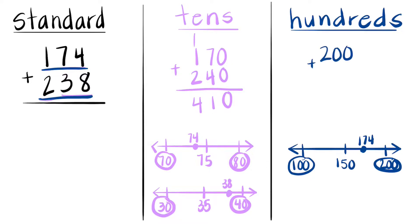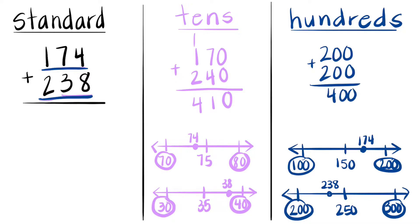Now we need to round the number 238. If we're putting that on a number line, we know that the hundreds around 238 are 200 on one side and 300 on the other. Halfway would be 250. 238 would be before 250. So is it closer to 200 or 300? It's closer to 200. 200 plus 200 is 400.